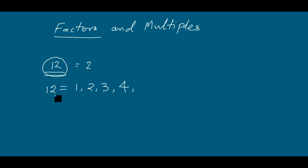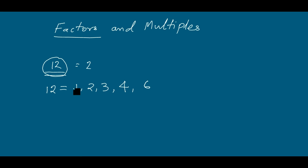Let us try for 5 — no, 5 cannot divide 12, so 5 is not a factor of 12. Next, 6: if both the divisibility rules of 2 and 3 pass, that means 6 can divide 12. So 6 is also a factor of 12.